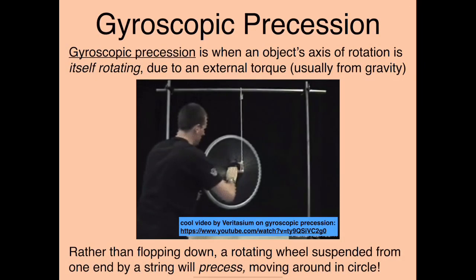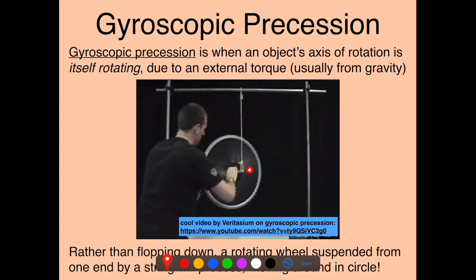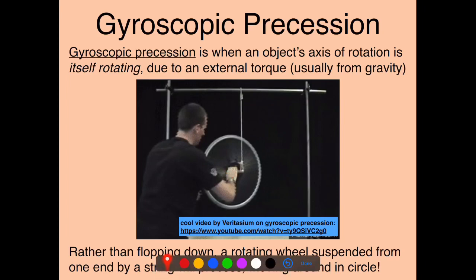Related to that is gyroscopic precession. In a common physics demo, a string hangs vertically with an axle attached at the bottom, and the axle goes through a wheel. If the wheel is not rotating and released, it just flops down and hangs vertically. But if the wheel is spinning, something unexpected happens.